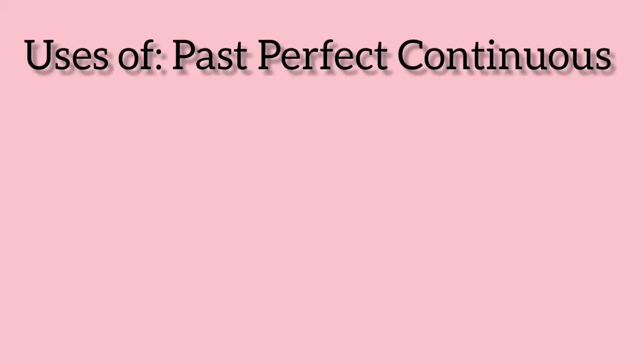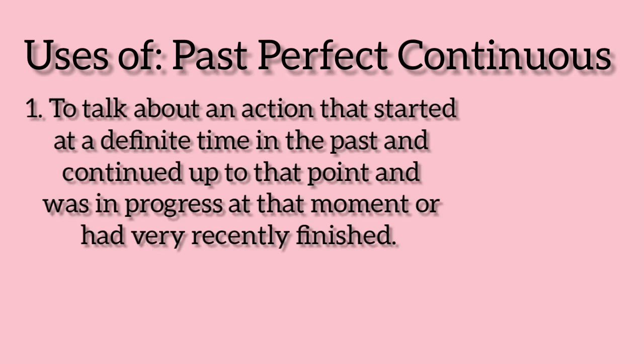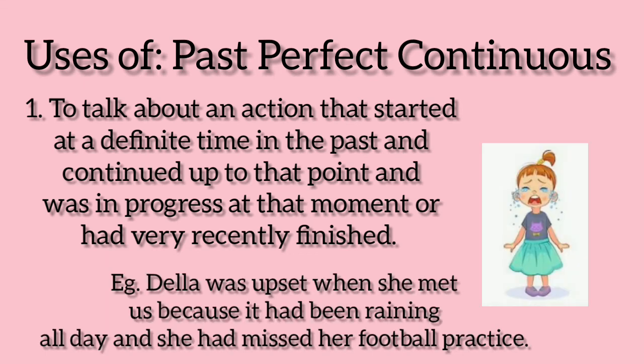The past perfect continuous tense is used to talk about an action that started at a definite time in the past and continued up to that point and was in progress at that moment or had very recently finished. For example, 'Della was upset when she met us because it had been raining all day and she had missed her football practice.' The action had been going on all day and at the time of speaking, she was upset because she had missed her football practice.